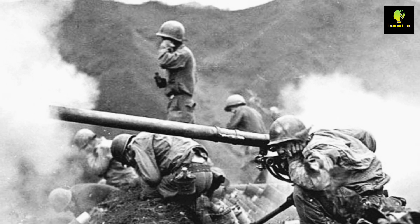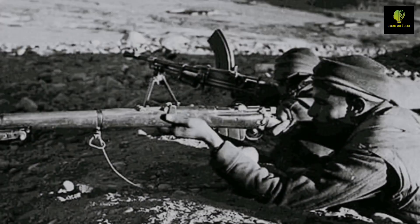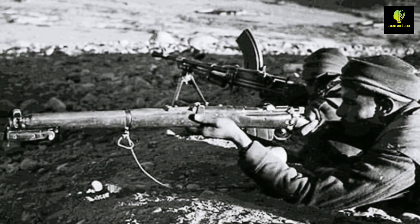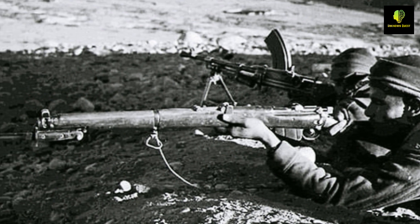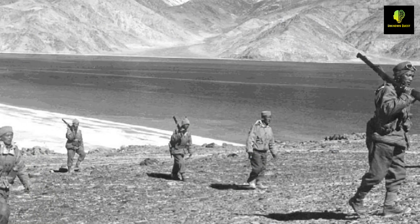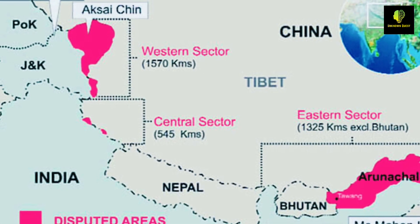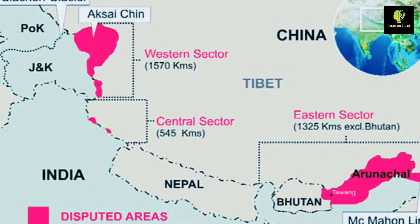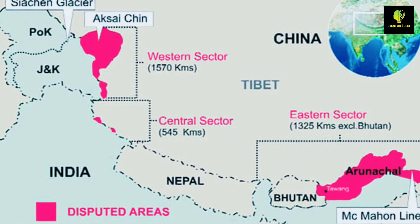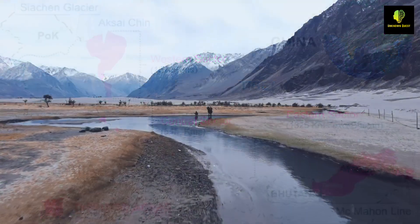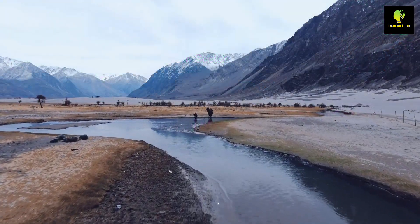In 1962, the two countries went to war over this boundary line. The conflict ended with China occupying Aksai Chin, which India claims is its own territory.